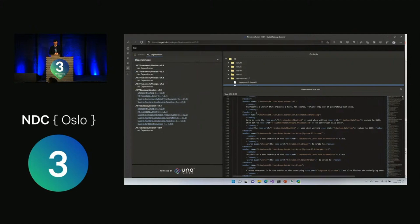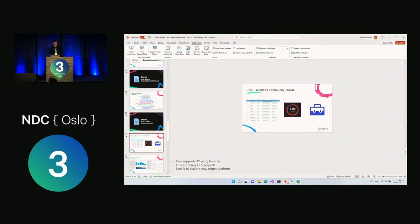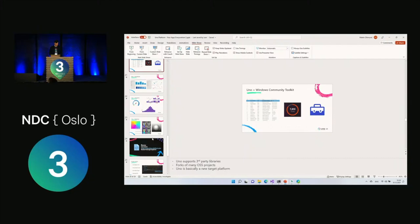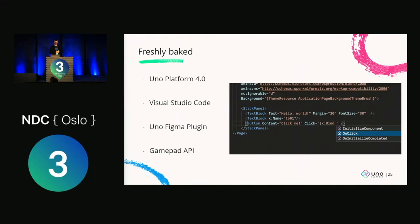We had a conference called UnoConf 2021 which introduced Uno Platform 4.0 — a new version supporting .NET 6 and all the latest from Microsoft, with more new controls and APIs. The main feature is .NET 6, and you can run WebAssembly .NET 6 applications with Uno Platform 4.0. We also have full support for Visual Studio Code with full XAML completion and hot reload support, meaning you can live-edit the application and changes show up immediately in the running browser instance.